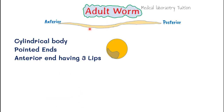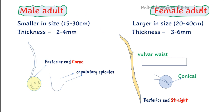The adult worm has a unique feature: the part containing the mouth is called the anterior part and the end part is called the posterior part. The body is cylindrical — not flat or tape-like. Both ends are pointed, and the anterior part has three lips, which is a very important feature of nematodes. There is one lip at the upper side and two at the lower side.